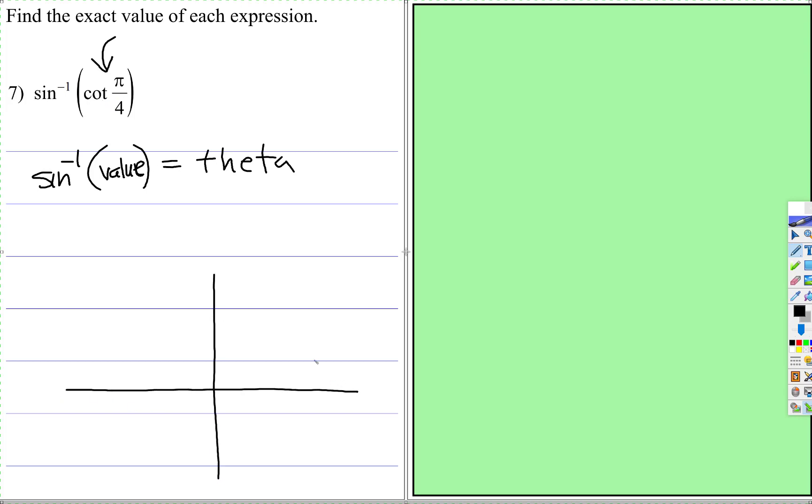Well, cotangent of π/4, remember cotangent is adjacent over opposite, and at π/4 the cosine or the adjacent and the opposite are the same value. So cotangent of π/4 is just 1.